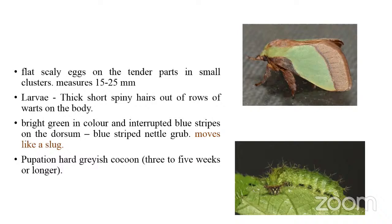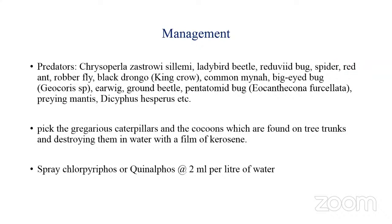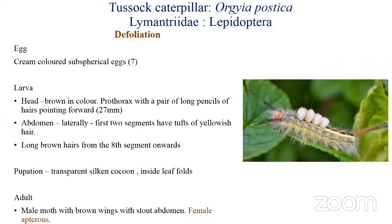For management, conserve predators, pick up the gregarious caterpillar, and destroy it in water with a film of kerosene. You can also spray chlorpyrifos or quinalphos. The next pest is the tussock caterpillar, Euproctis postica, belonging to family Limacodidae and order Lepidoptera. This pest is also a defoliator.